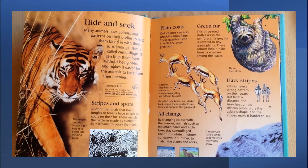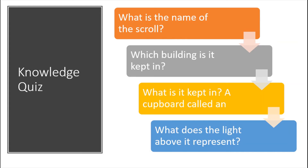If you are finished with your learning today, we have some final knowledge quiz questions. Question one: what is the name of the scroll? Question two: which building is it kept in? Question three: what is it kept in? And finally: what does the light above it represent? Pause the video if you haven't already had a think about those answers.